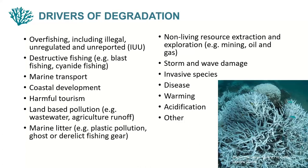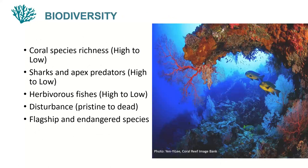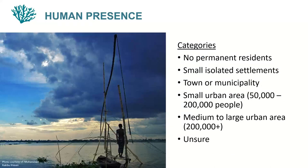The next slides go into more detail on the drivers of degradation — you'll see this on both the site selection survey and the business model survey. We're trying to understand what the main drivers are at that site. There's a comprehensive list to check through. We're also asking about biodiversity — things like coral species richness, sharks and apex predators, herbivorous fish, current disturbance, and whether there are flagship or endangered species on the site. For human presence, the scale ranges from isolated with no permanent residents all the way through to large urban areas of 200,000.